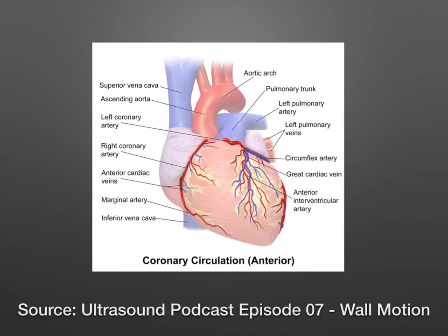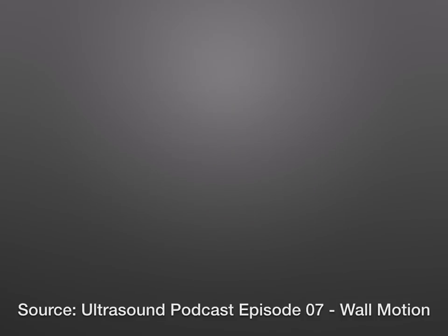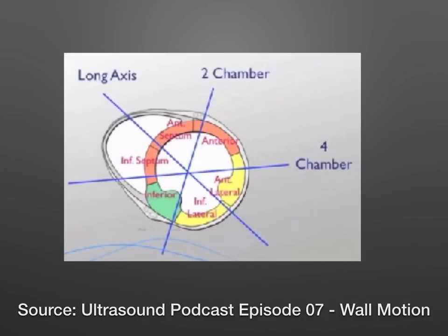The easiest way to conceptualize this is to look at the heart as you normally do and see where the major vessels are, then flip that so you're cutting the heart in half into the parasternal short axis view. I'm not going to focus on the specific names of the different wall segments — there are a lot of different cardiology terms for areas of the heart. What I want to show is that once you orient the heart, the top part is where the LAD runs, the lateral portion is where the circumflex is, and the inferior part is where the RCA is. We'll keep coming back to this diagram throughout.